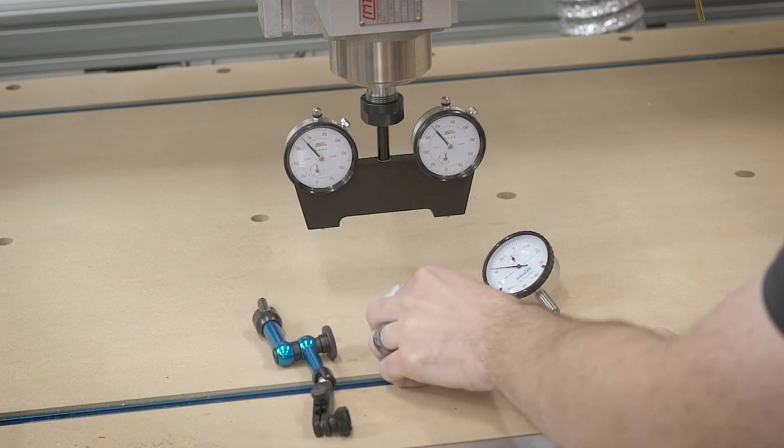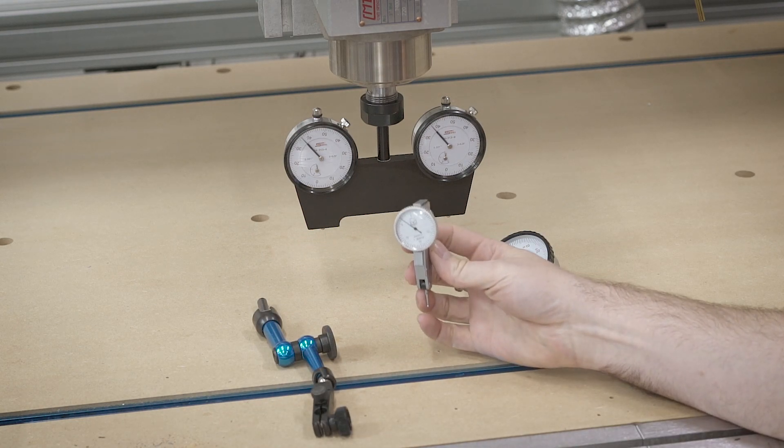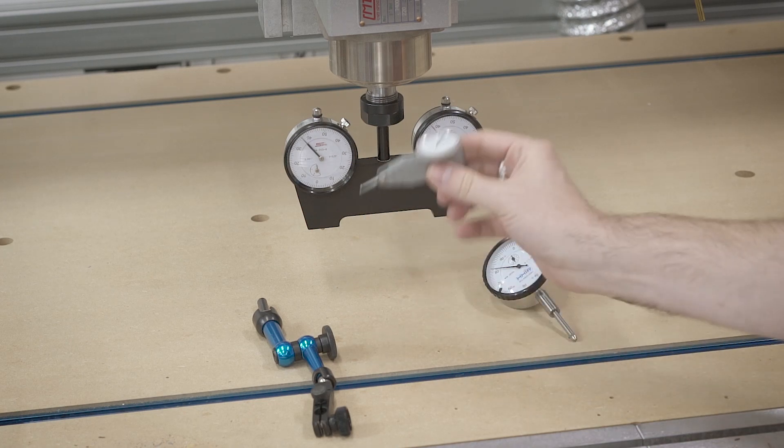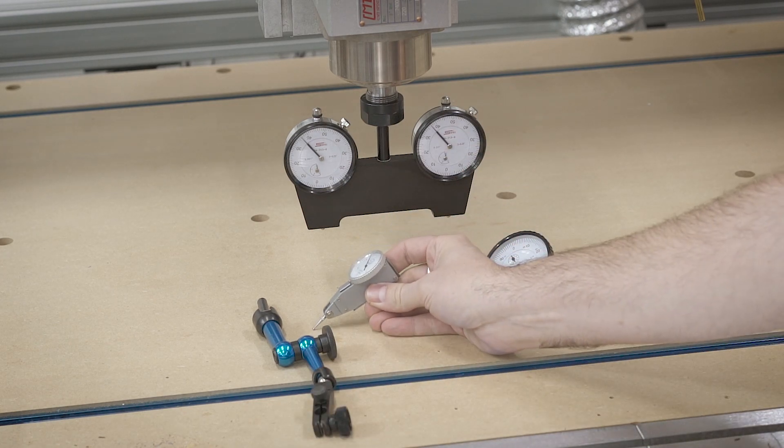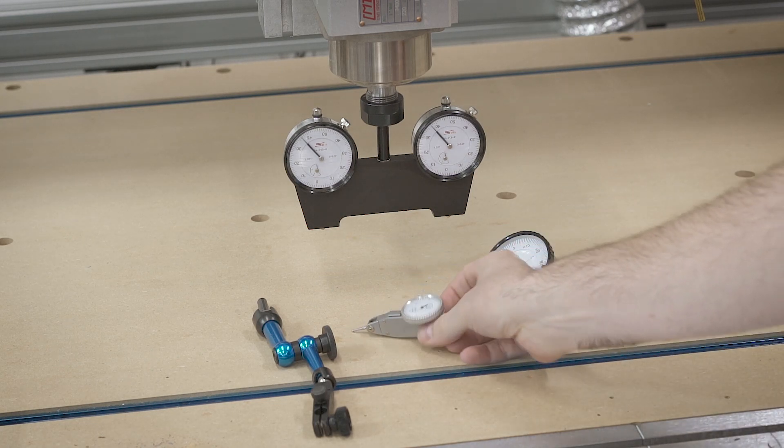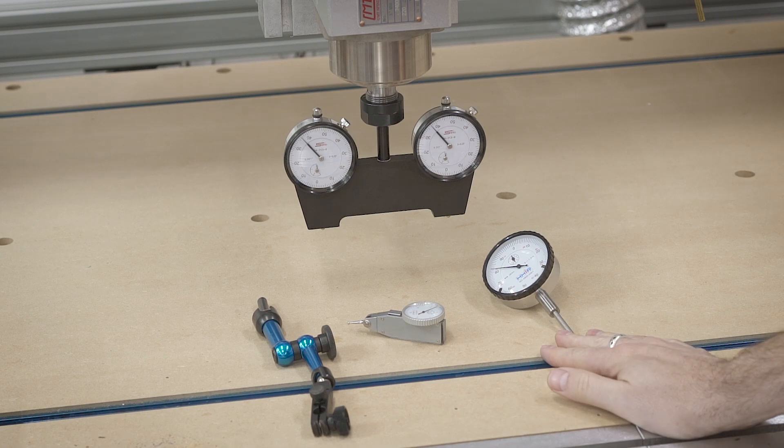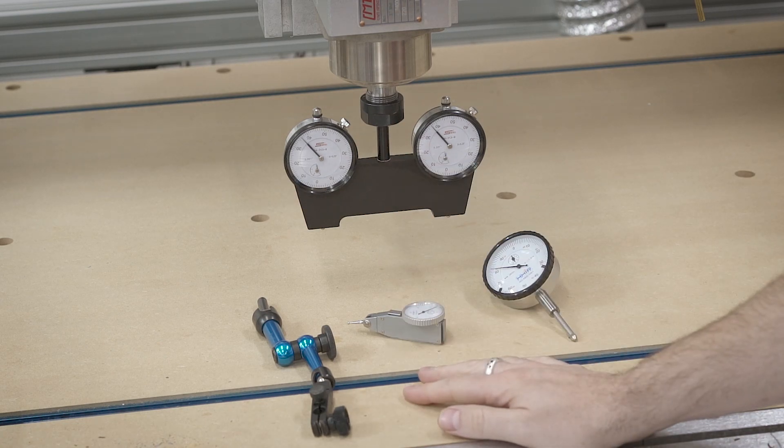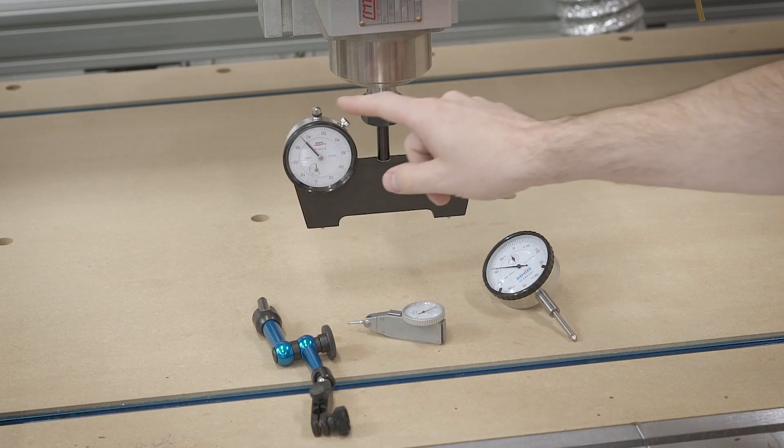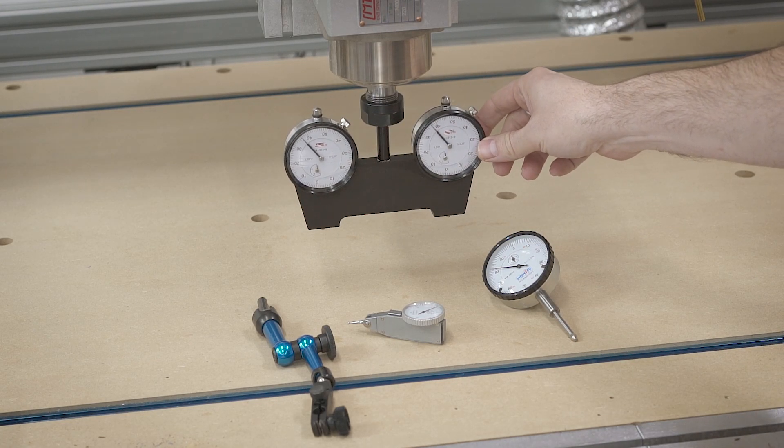The much preferred way to do this would be to use a dial test indicator just because these are a little bit more accurate. So same kind of concept, you attach it into the arm, take a reading on one side, sweep it around, take a reading on the other side. But any of these will work and the process is pretty much identical. This just gives you the ability to take readings on the left and the right or the front and the back side at the exact same time.